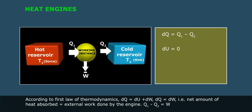According to first law of thermodynamics, ΔQ is equal to ΔU plus ΔW. That is, net amount of heat absorbed is equal to external work done by the engine. Q1 minus Q2 is equal to W.